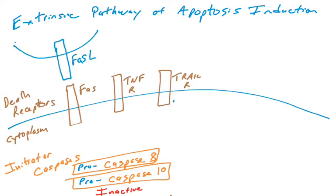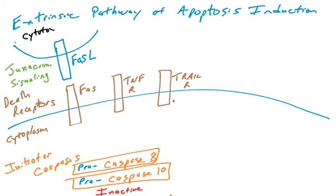The first ligand engages the FAS receptor — it's a protein called FAS ligand, found on the surface of other cells such as immune cells. This is an example of juxtacrine signaling. When we have a molecule on the surface of one cell interact with a molecule on the surface of another, sending a signal into that cell, that is juxtacrine signaling. The FAS ligand is found on the surface of cytotoxic T cells. When the FAS ligand engages the FAS receptor, that can send a signal to initiate apoptosis.